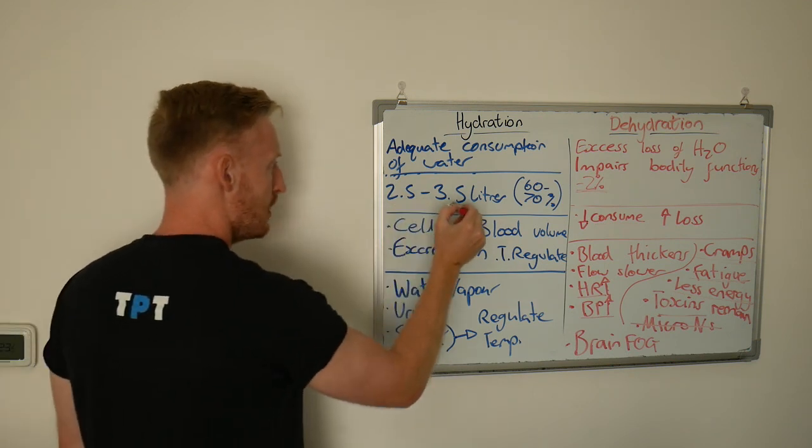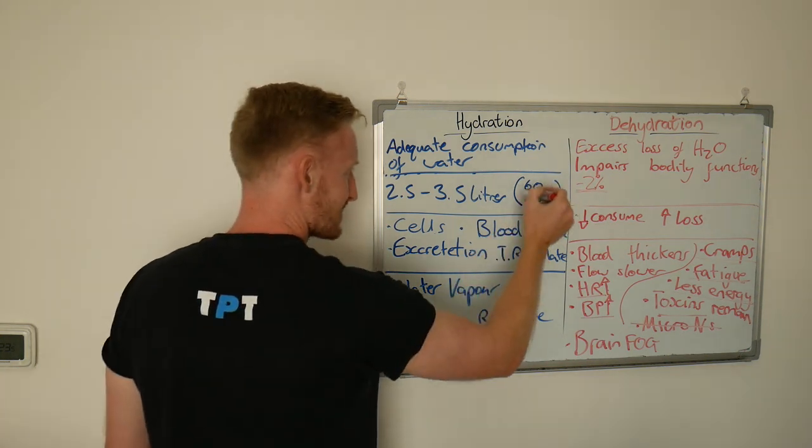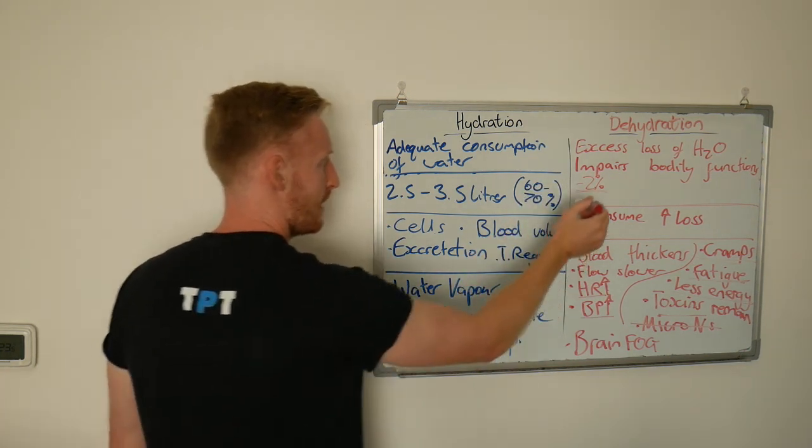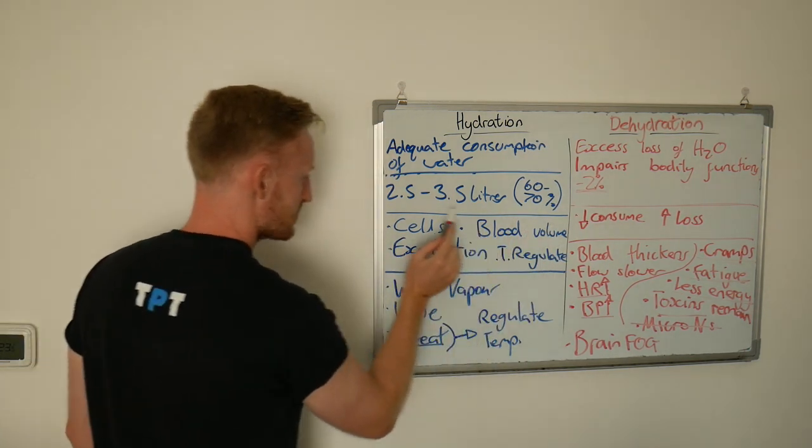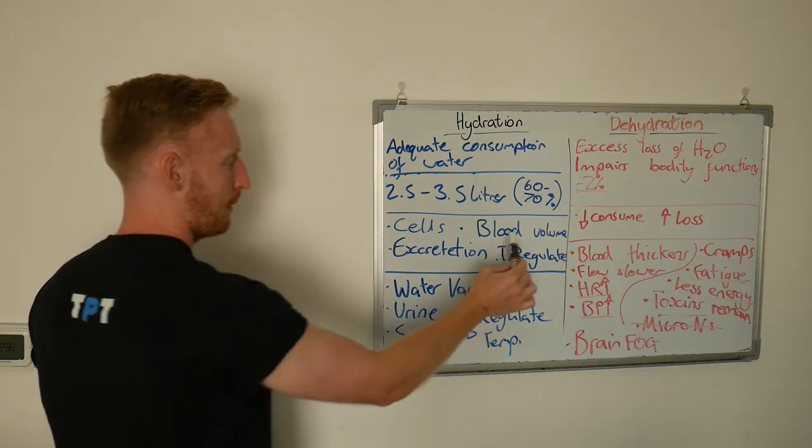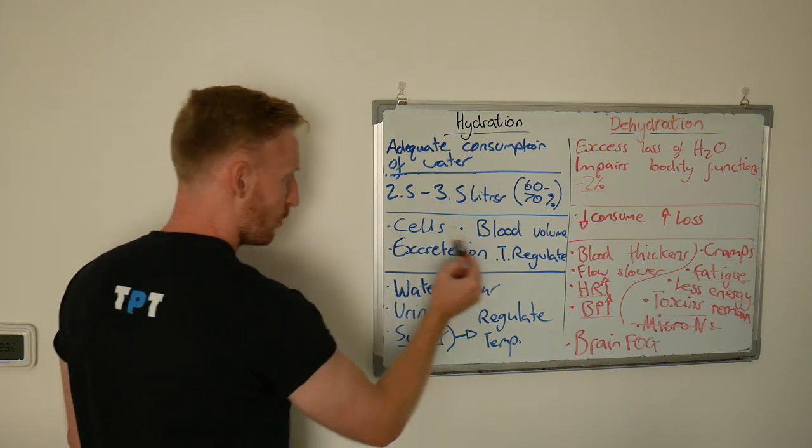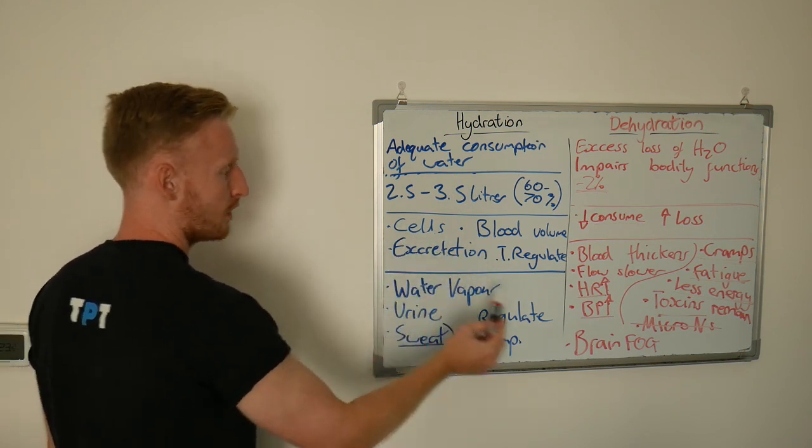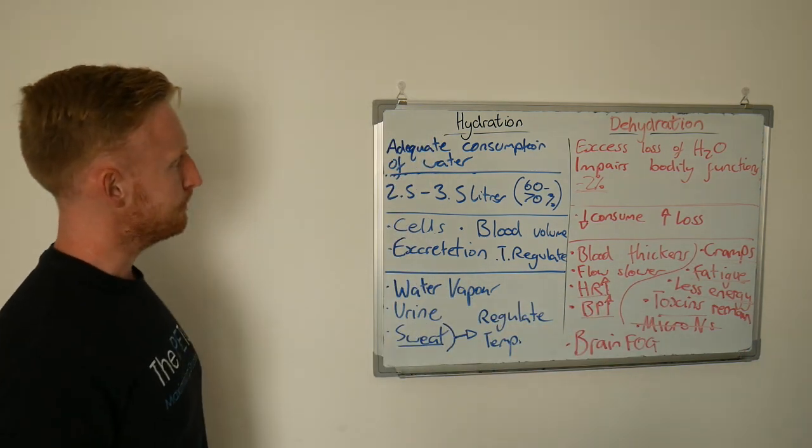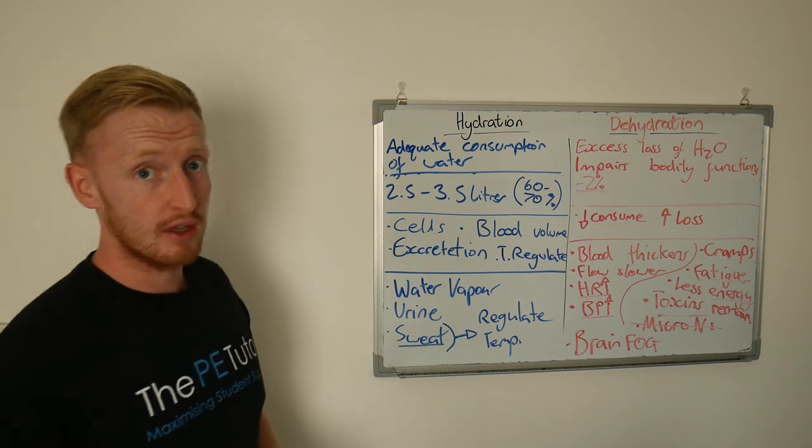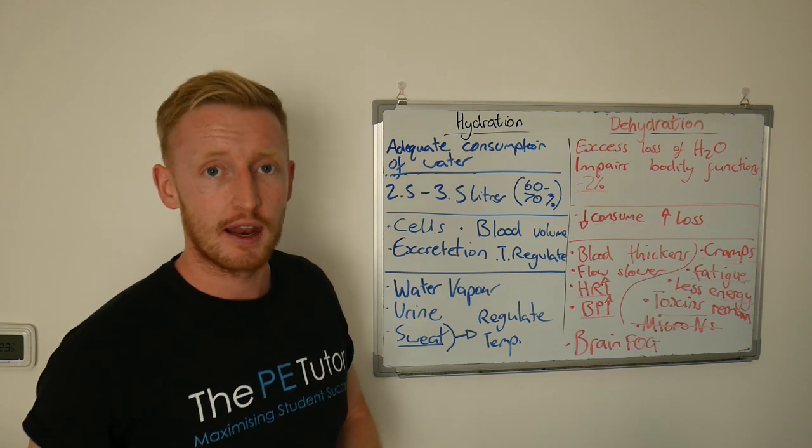And we've lost too much. And we've had this excessive loss of water which is now impairing bodily functions. Why? Because we didn't consume between two and a half and three and a half liters of water. Which meant that we no longer sat in this 60 to 70% bracket. We experienced this 2% drop. Which meant all of its uses suddenly became unhinged. Our blood volume dropped. We could no longer thermoregulate properly. We no longer excreted toxins. Our cells were no longer to work correctly and produce energy and contract properly. And that is why hydration is very important. So I hope you found that useful and I look forward to seeing you again in the next one.